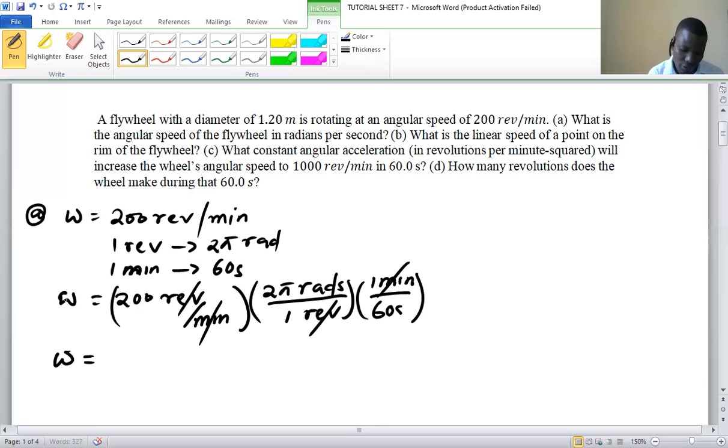So the angular speed, omega, is going to be 20.9 radians per second. This is how we get part A.